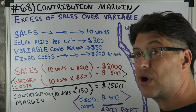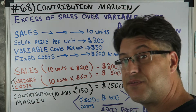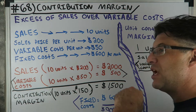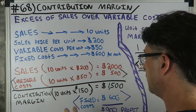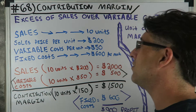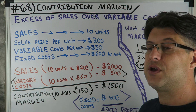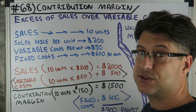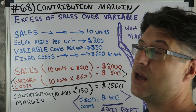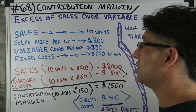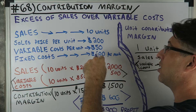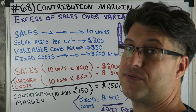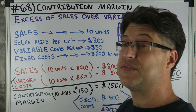Fixed costs would be like rent, a telephone bill, or a WiFi bill — something that doesn't change per usage, it's fixed. Variable costs only occur or change when you're selling units. Like we're preparing tax returns — every time we prepare and sell one for $200, it costs us $50 in tax software. So our variable cost per unit is $50.